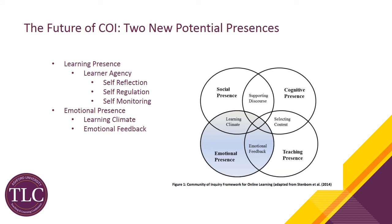In recent years, two new possible presences have been discussed by researchers. These include arguments from Peter Shea and his colleagues that the Community of Inquiry lacks the critical role of the learner herself or himself. This includes pieces around learner agency, including self-reflection, self-regulation, and self-monitoring. Similarly, Marty Cleveland-Innis and her colleagues have argued for emotional presence separate from social presence, as indicated in the modified Community of Inquiry model depicted here.